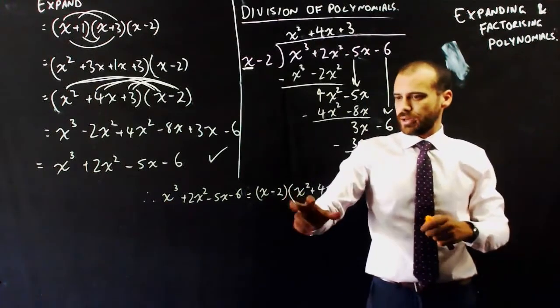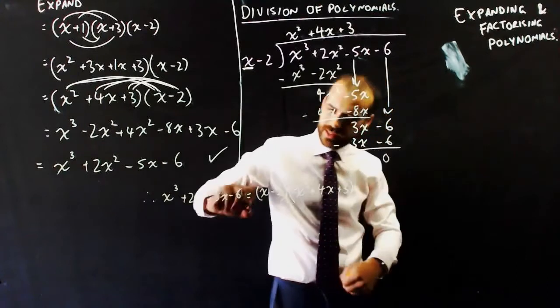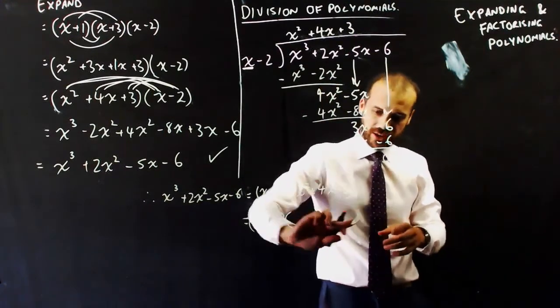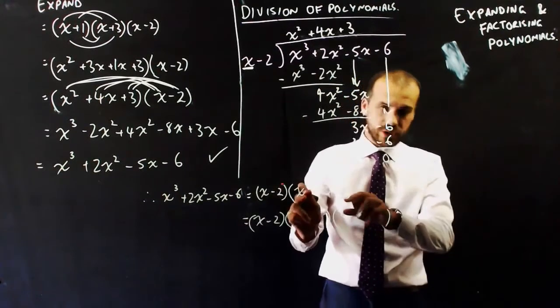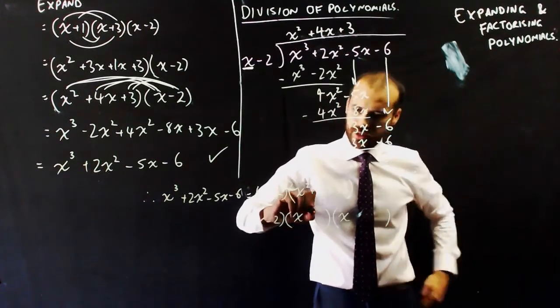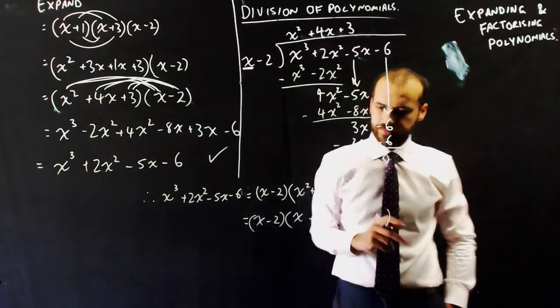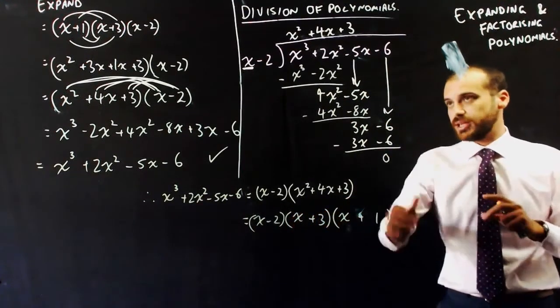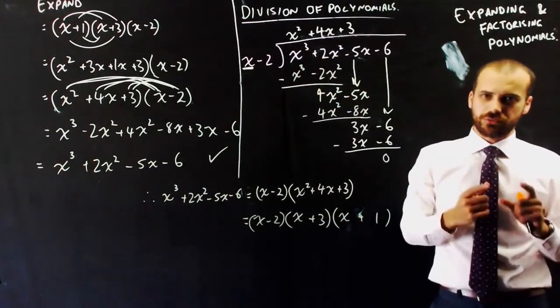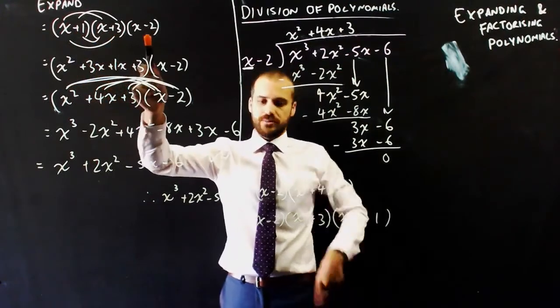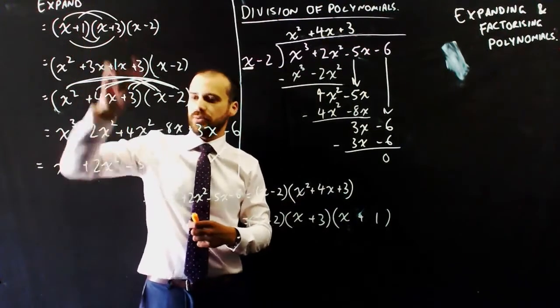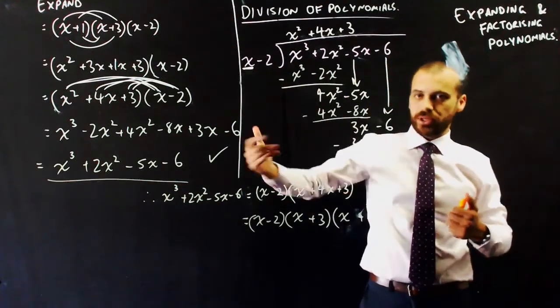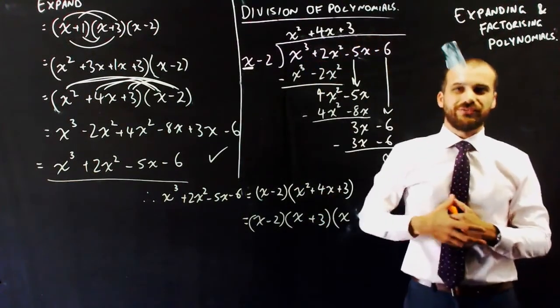Okay, so that expanded polynomial is equal to this semi-factorized polynomial. Now, finally, I can look at x squared plus 4x plus 3, and using the AC method, I'm not going to go through the whole AC method right now, but if I were to use the AC method, I could further factorize that into two more brackets, and you can do this yourself. That's going to be an x, that's going to be an x, that's going to be a 3, and that's going to be a 1. And what do we see? We see that x minus 2 times x plus 3 times x plus 1 is the same as x cubed plus 2x squared minus 5x minus 6, which we already knew because we started here, x plus 1, x plus 3, x minus 2, same brackets, different order. We started here, we expanded it, and we got that polynomial. So, first we moved forward by expanding it, by multiplying, and then we moved backwards by dividing it using something called division of polynomials.